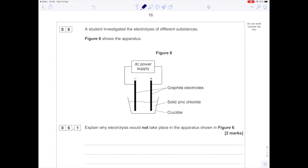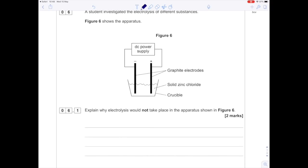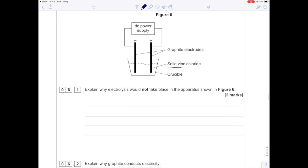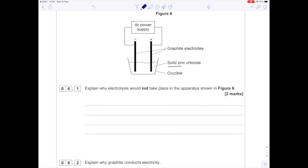A student investigated the electrolysis of different substances. Figure 6 shows the apparatus. Explain why electrolysis would not take place. Graphite electrodes are good, crucible is fine. The issue is the solid zinc chloride. Because the zinc chloride is solid, the ions are not free to move. Don't talk about electrons here - it's a giant ionic structure, so we need to talk about ions. So no electricity can be conducted.